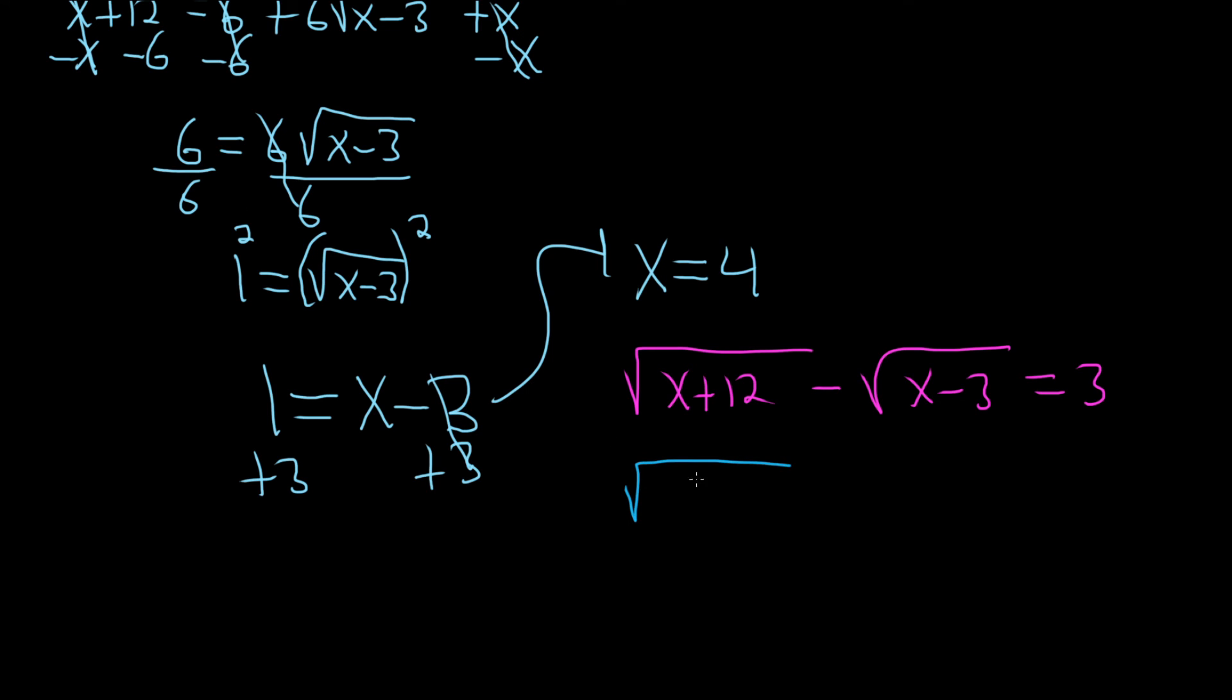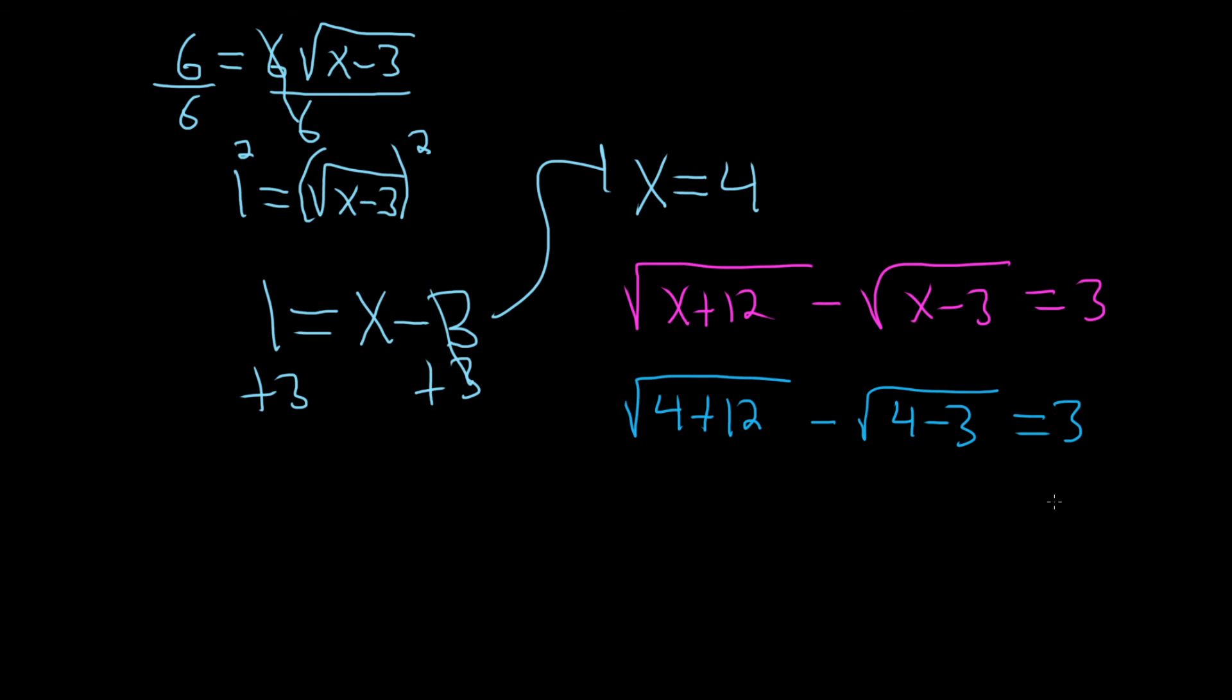We have square root of 4 plus 12 minus square root of 4 minus 3, which should equal 3. 4 plus 12 is 16, so square root of 16. 4 minus 3 is 1, so square root of 1. Square root of 16 is 4, square root of 1 is 1. 4 minus 1 is 3, so 3 equals 3. Yes, it checks! So x equals 4 is the answer. If it hadn't checked, there would have been no solution.